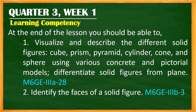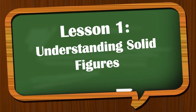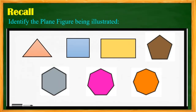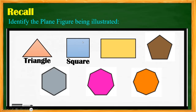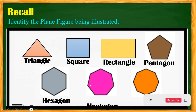In Lesson 1, Understanding Solid Figures, we first recall and identify plane figures. For number one, this illustration is a triangle. The next one is a square, then a rectangle, then a pentagon, then a hexagon, then a heptagon, and lastly an octagon. Those are the plane figures.